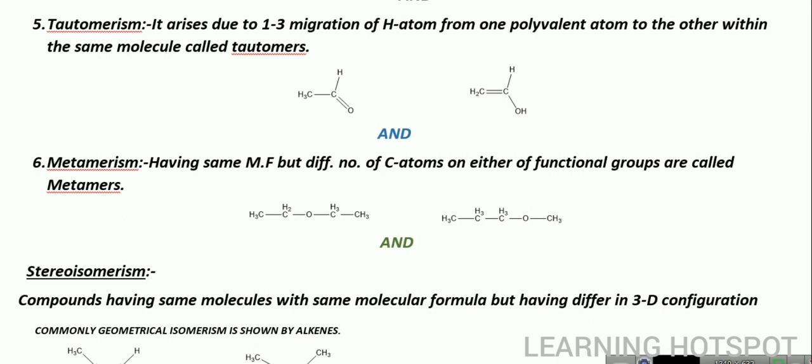Next, we have tautomerism. In this, there is a migration of a hydrogen atom from one position to another — from one polyvalent atom to the other — within the same molecule. Here we have an example where this hydrogen will shift from this position to this position. So this is an example of tautomerism.